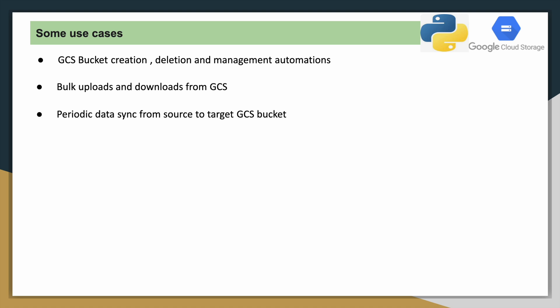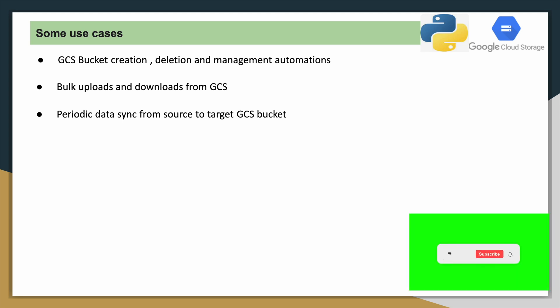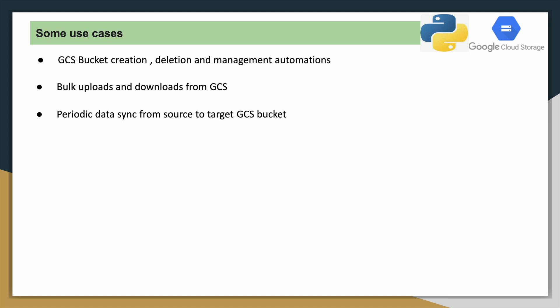The third use case: if you have to periodically sync data from the source system to the target system — in our case GCS is the target system — you can use Python client libraries for that. Based on your requirement, you can schedule that process using a scheduling tool.